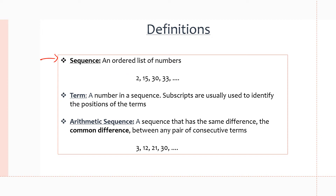Then we have a term. A term is a number in a sequence, such as 15 in the sequence we just looked at. To identify the position of a term, we use subscripts — which we will see in the next slide — to identify their position.